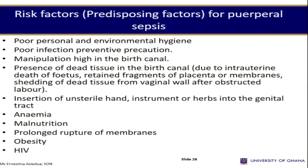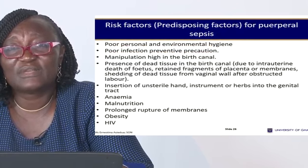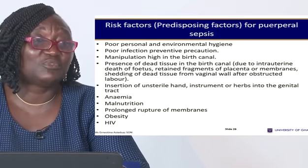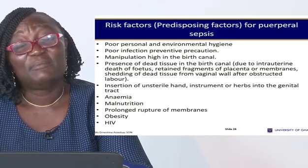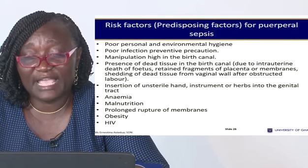Any manipulation in the birth canal for removal of placenta or D&C can lead to sepsis. Dead fetal tissue remaining in the birth canal, insertion of unclean instruments, and preparations done under unhygienic conditions predispose to infection. Anemia lowers immunity, making women prone to infection. Malnutrition, iron deficiency, prolonged rupture of membranes, obesity, and HIV also predispose to puerperal sepsis.